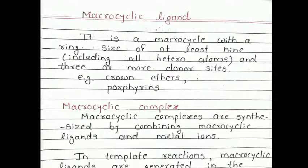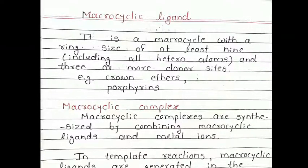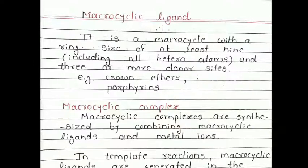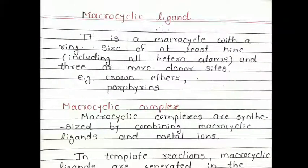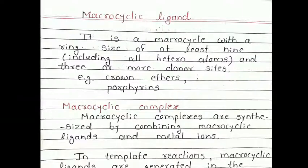What are macrocyclic complexes? When macrocyclic ligands combine with a metal, they form complexes, and these are called macrocyclic complexes. So, macrocyclic complexes are synthesized by combining macrocyclic ligands and metal ions.